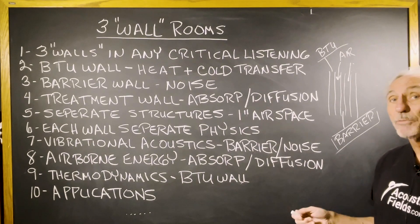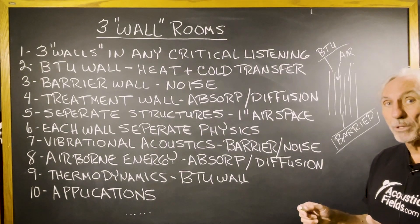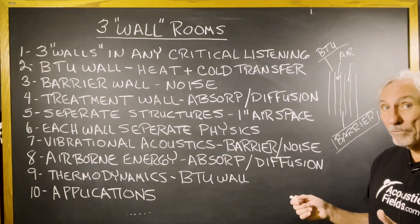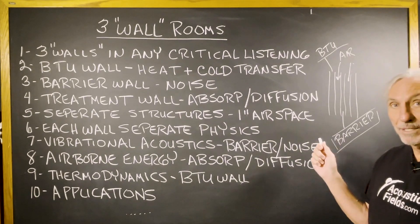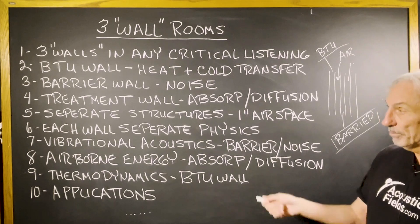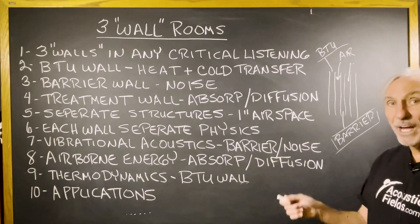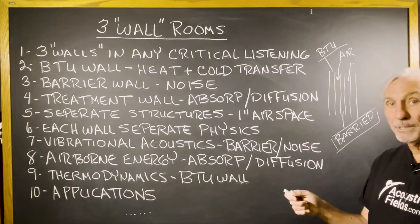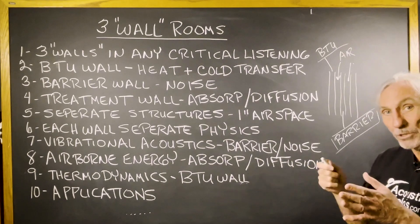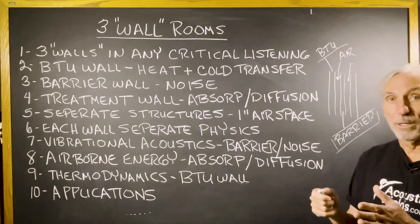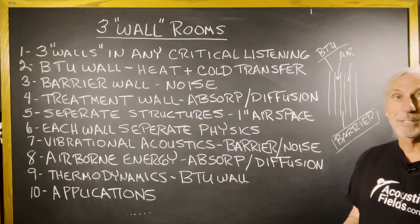We build new rooms where the noise floors are 30 dB SPL. Take a reading in your room — see what yours is. 50? 45? It takes a lot of design to get that low a noise floor with barrier technology. So we're not going to be able to use a wall designed to keep our room warm and cold to stop noise most of the time. We can use the barrier wall in conjunction with the BTU wall a lot of times in the same space, depending on where you're at.